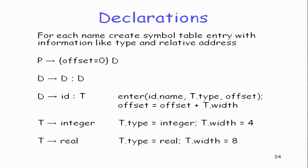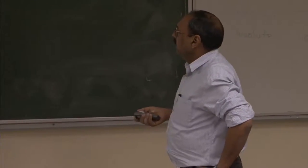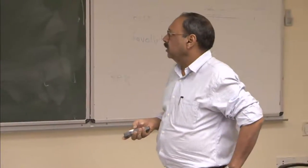We are trying to generate relocatable code. In each scope my offset starts at 0. Every time I assign some number of bytes to a variable, I add that width to the offset, ensuring that whenever a new variable is entered in the symbol table it gets the current offset. For the first variable I enter offset 0; if it takes 4 bytes, the next variable gets offset 4. We also discussed arrays, pointers, and so on.